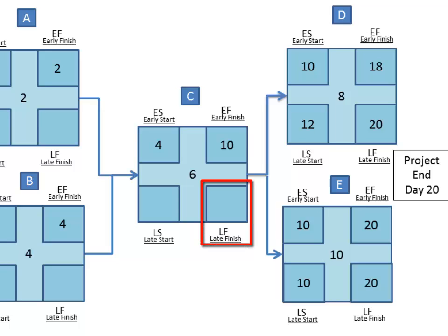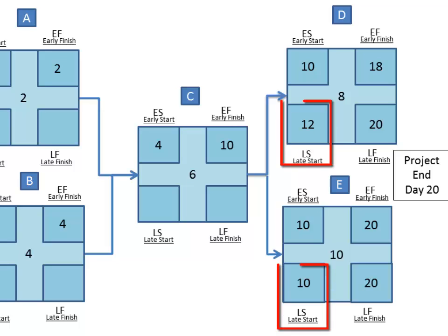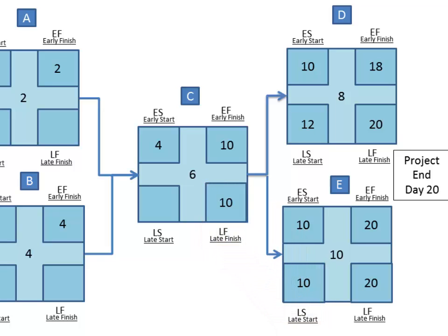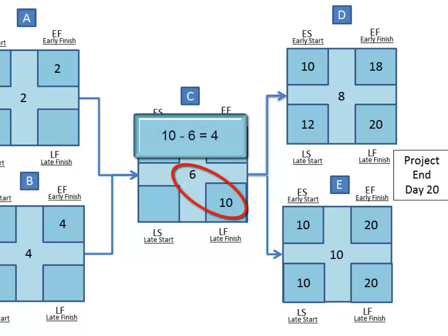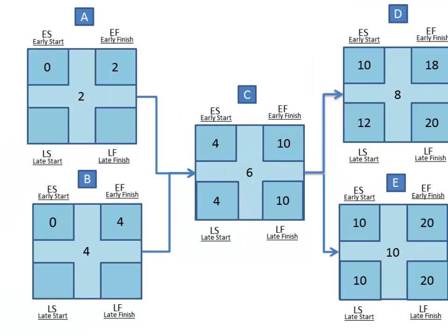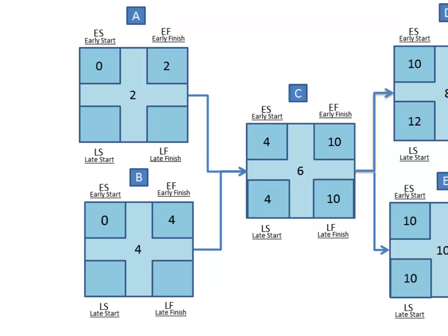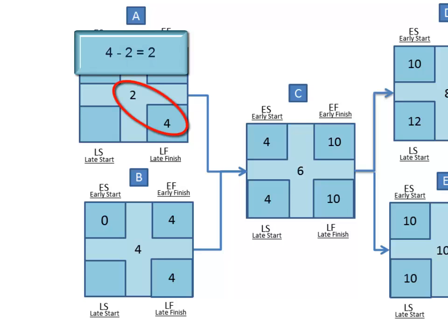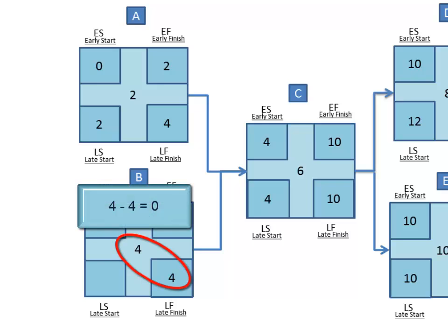Now we need to determine the late finish for Task C. Since we have multiple successors D and E for predecessor C, we choose the lower of the multiple late starts, which is 10. For the late start for C, subtract the duration of 6 from the late finish of 10 to get 4. Moving backward to Task A: since the latest time C can start is day 4, the latest time A can finish is also day 4. The same method applies to B, so we put a 4 there as well. Subtract the duration of Task A from the late finish, and the same for Task B — 4 minus 4 equals 0.